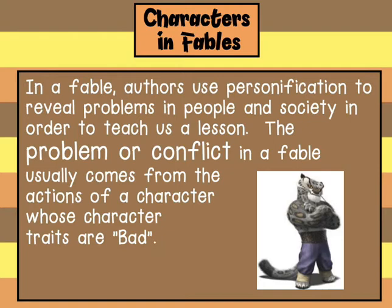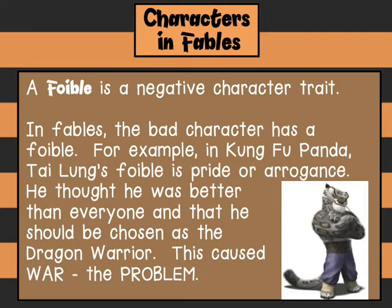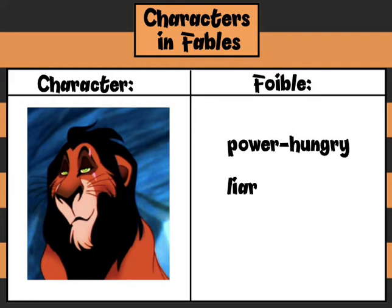In a fable, authors can also use personification to reveal problems in people and society in order to teach us a lesson. The problem or conflict in a fable usually comes from the actions of a character whose character traits are bad. A foible is a negative character trait in a fable — the bad character has a foible. For example, in Kung Fu Panda, Tai Lung's foible is pride or arrogance. He thought he was better than everyone and that he should be chosen as the dragon warrior, which caused the war.